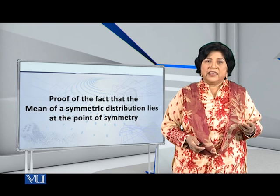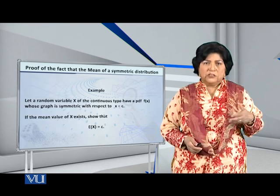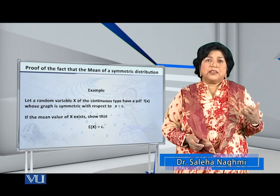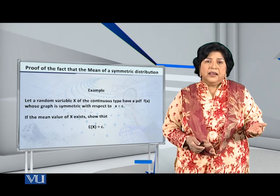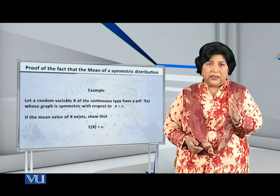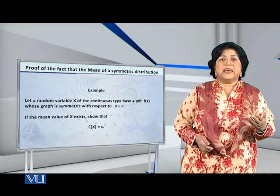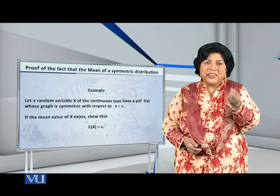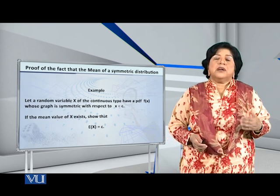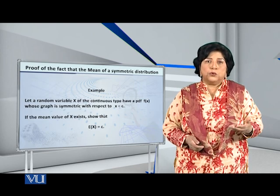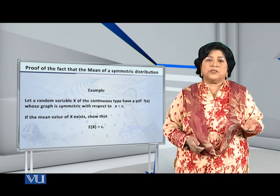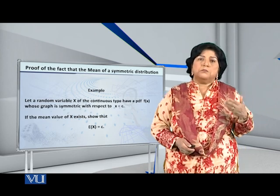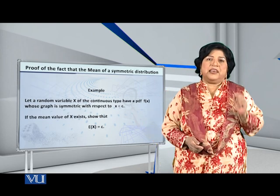Alright, the question is: Let a random variable X of the continuous type have a PDF f(x) whose graph is symmetric with respect to x equals c. I am not saying it is symmetric about the origin — the point of symmetry has the value c. And what we have to show is that the expected value of X, i.e., the mean of X, is equal to c. That is, the point of symmetry is where the mean of this variable lies.